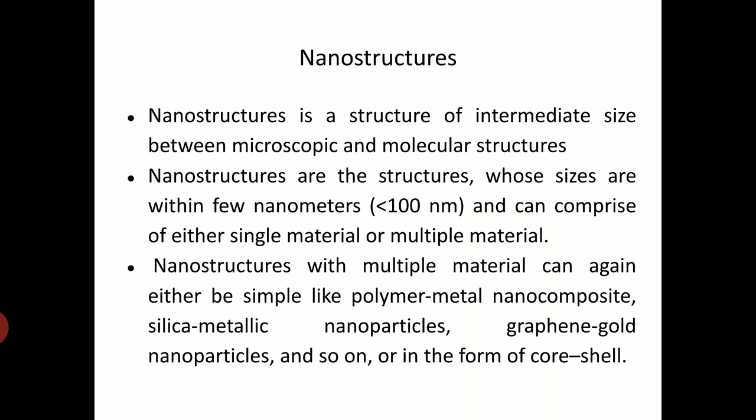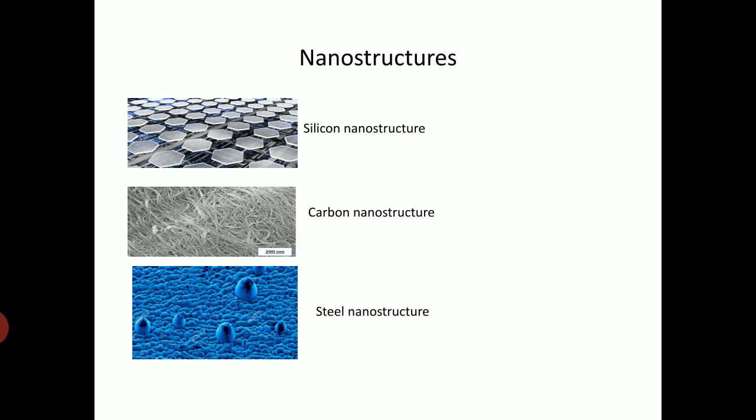Nanostructures with multiple materials can again either be simple like polymer-metal nanocomposites, silica-metallic nanoparticles, graphene-gold nanoparticles and so on, or in the form of core-shell. These are the few examples of nanostructures.